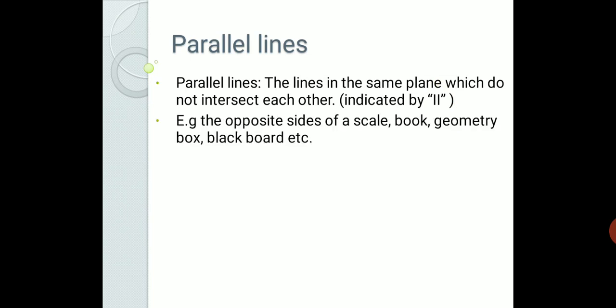The opposite sides of a scale, book, geometry box, blackboard, etc. are examples of parallel lines. Other than these examples, if you observe the window, there is a grill outside in which some bars are there. In many windows, the bars are parallel to each other. So these are examples from our day-to-day life.